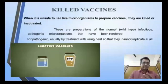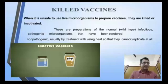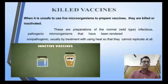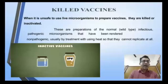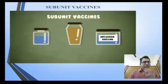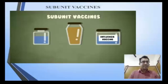Killed vaccines are used when the microorganism cannot be sufficiently attenuated. The organism is killed so it cannot produce disease, but its proteins are still present to generate an immune response. An example is IPV (inactivated polio vaccine). Subunit vaccines use only parts of the microorganism — some proteins, lipoproteins, etc. — rather than the entire live or killed organism. An example is the influenza vaccine.